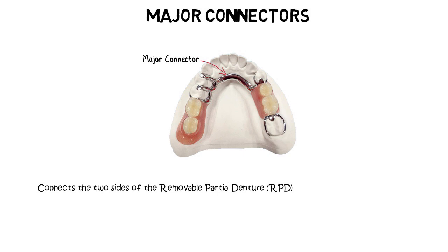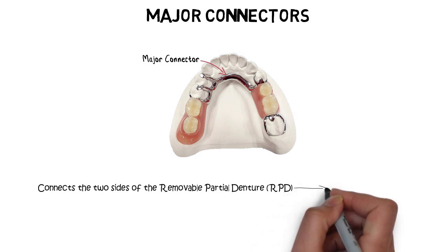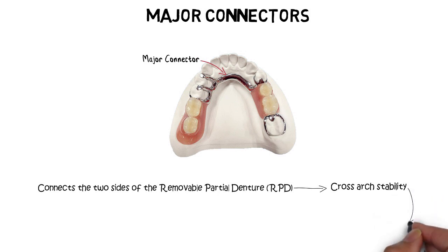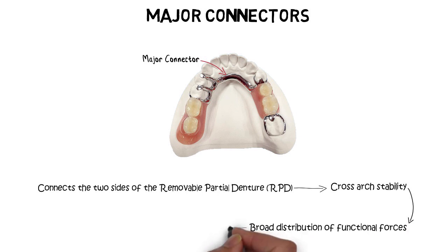All parts of the RPD are either directly or indirectly attached to the major connector. By connecting the two main parts of the denture, the major connector provides cross-arch stability, which allows the denture to resist displacement by applied functional forces through broad distribution of forces across the prosthesis.